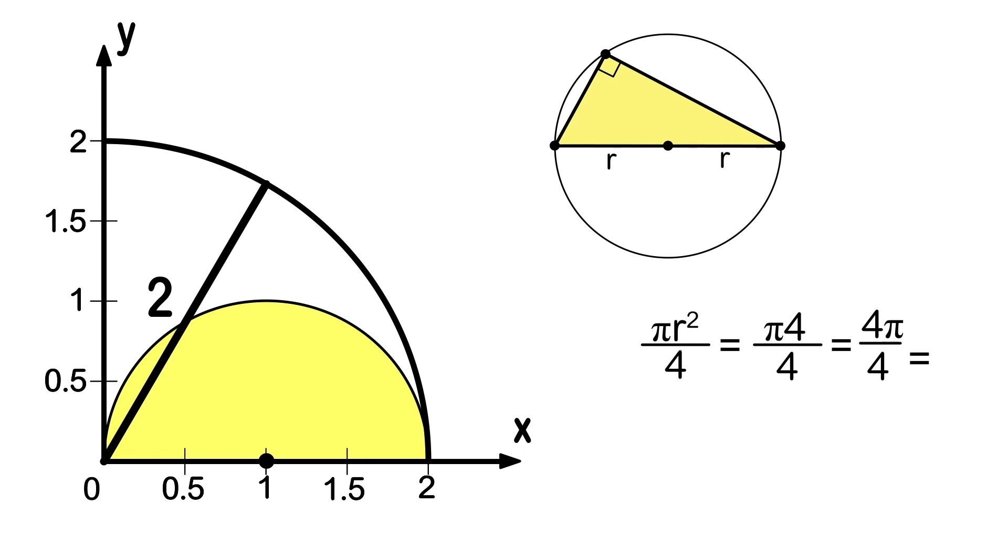From this, the area of the quarter circle will be π. And this will be the solution.